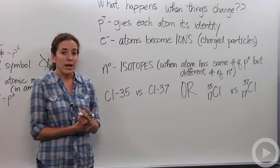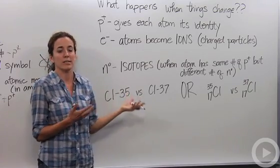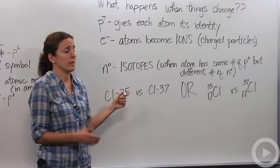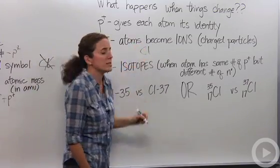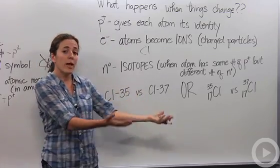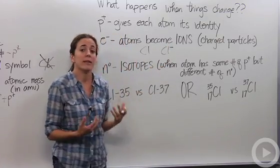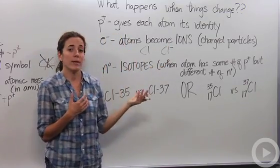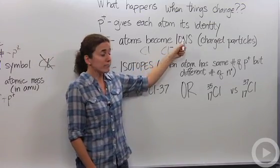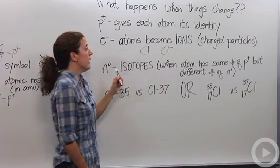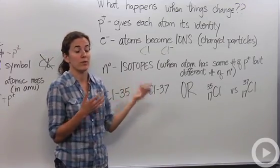If you change the number of electrons, all you're changing is the electrical charge of that particular element. For chlorine, if we want to denote that it's neutral, we just write Cl with nothing on it. If it gains an electron, we write Cl minus — it has one more negatively charged particle than positively charged particle. We call these ions — they're charged particles that can be positively or negatively charged depending on whether we gain or lose electrons.